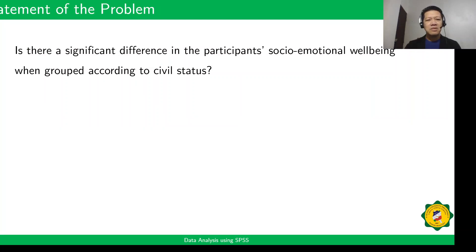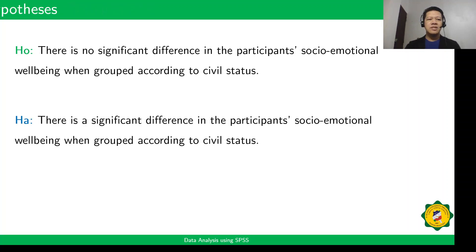The statement of the problem is: Is there a significant difference in the participants' socio-emotional well-being when grouped according to civil status? The formal null hypothesis is: There is no significant difference in the participants' socio-emotional well-being when grouped according to civil status. The alternative hypothesis is: There is a significant difference in the participants' socio-emotional well-being when grouped according to civil status.